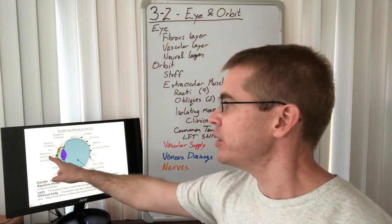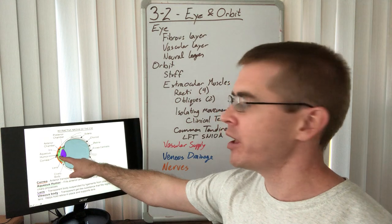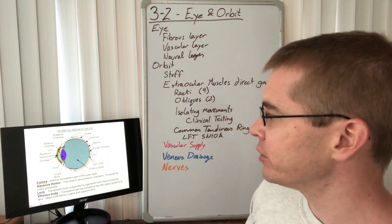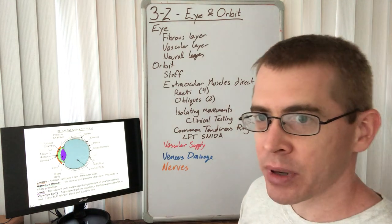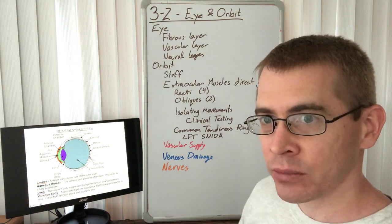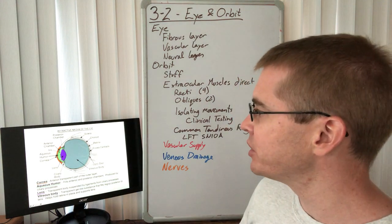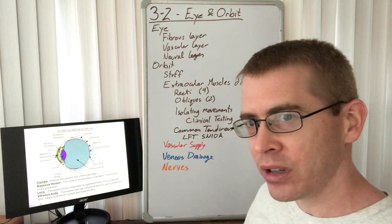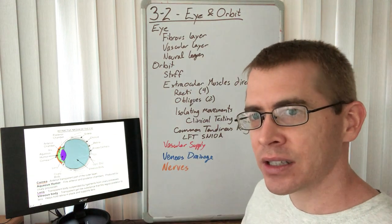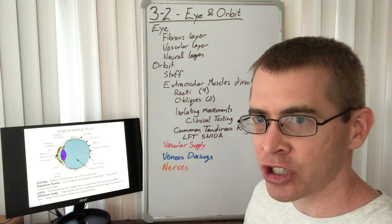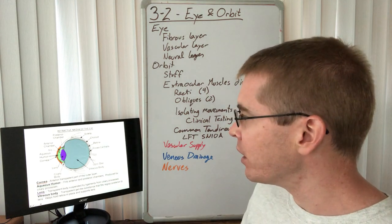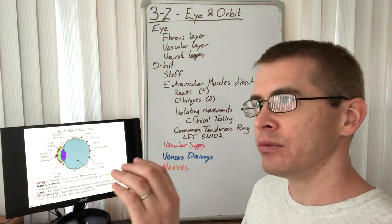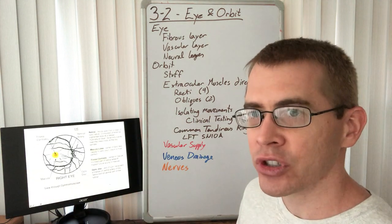Light travels in through the cornea, through the aqueous humor in the anterior chamber, through the lens, and then through the vitreous body — a transparent but very solid, firm, gel-like substance that supports the lens and pushes it against the iris to maintain the shape of the eye. That shape is critical for clear vision and proper focus.